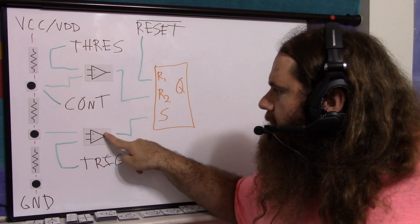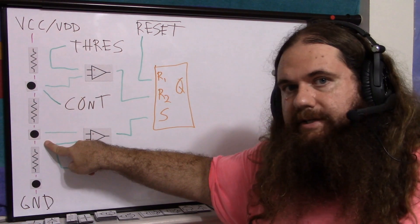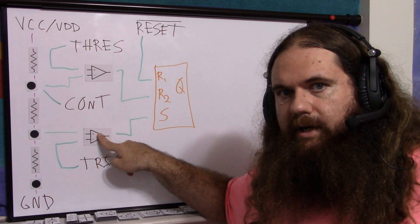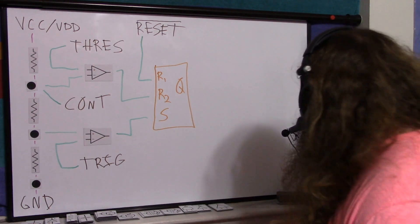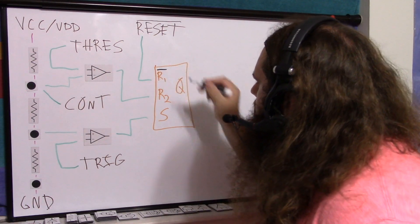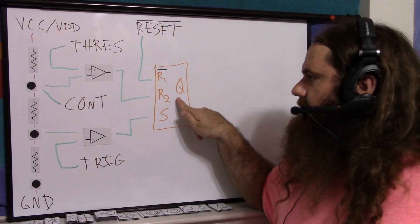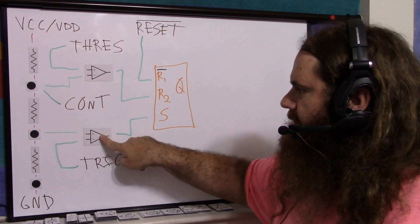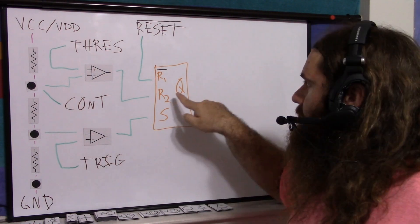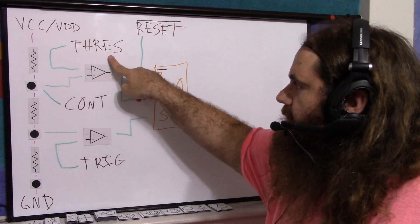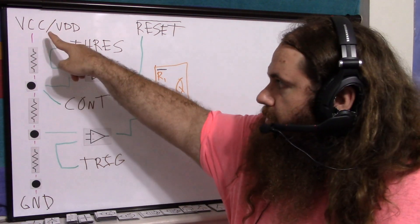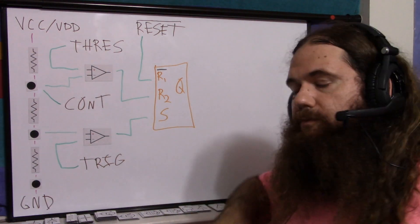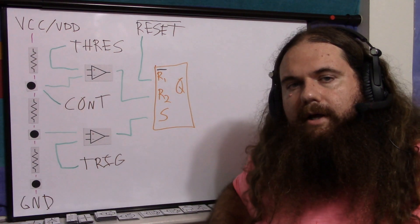When trigger voltage falls below the spot, which could be one third of VCC or one half of control, this is going to output a high, which means set. So when trigger voltage is below this point, this is outputting a high, which is giving it a set signal, which turns Q, the output, on. When threshold is higher than this point, so two thirds of VCC or the control voltage, this is outputting a high, which resets the flip-flop, the latch, and your timer goes low.